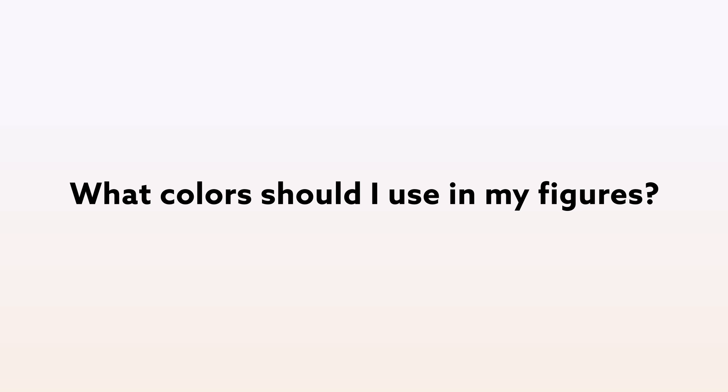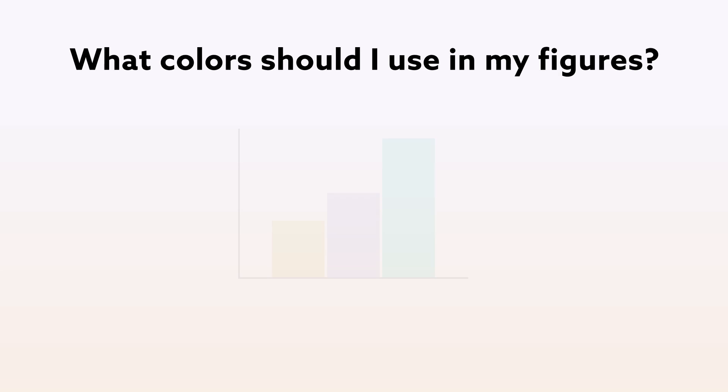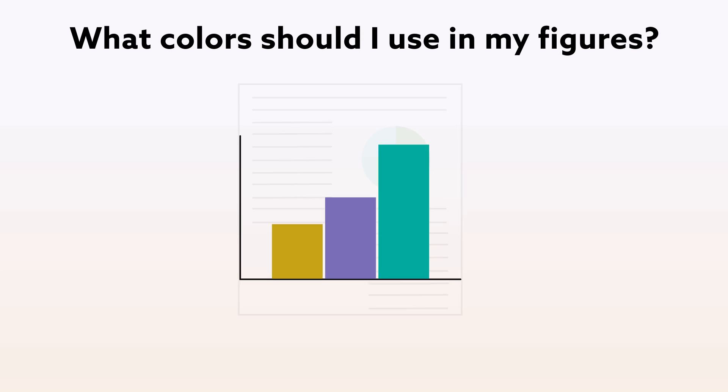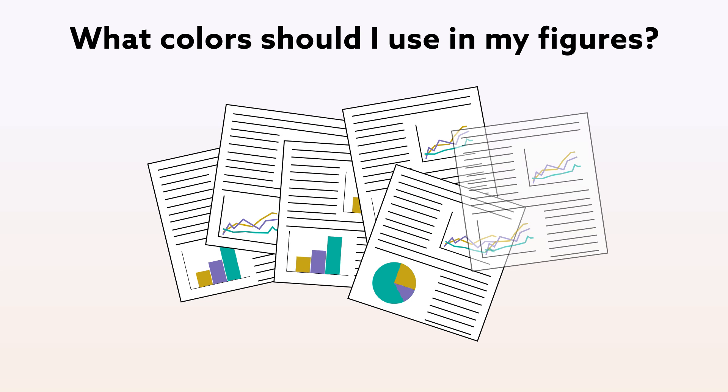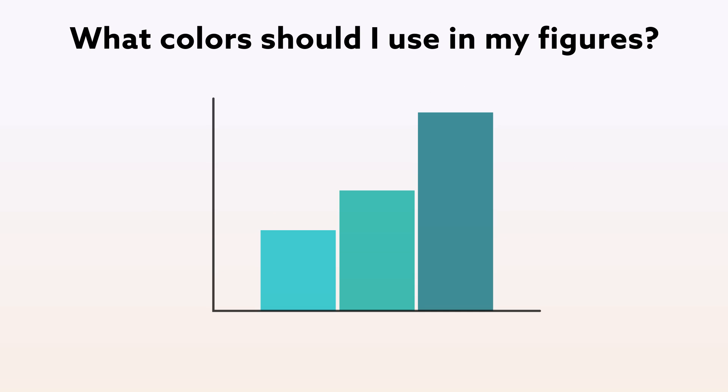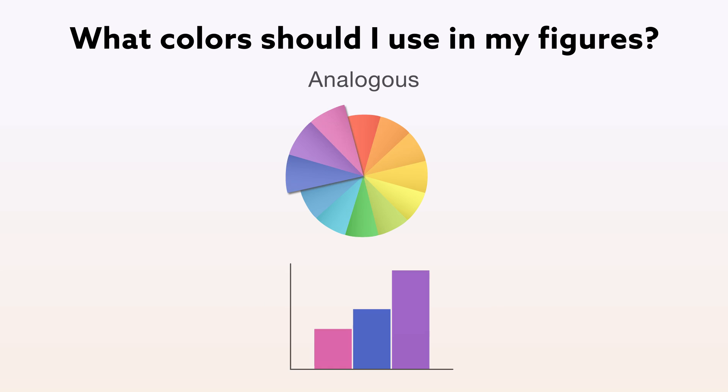The color or colors that you choose are really up to you. Some researchers prefer a specific color palette and use it consistently throughout their work as a sort of branding. Others choose colors depending on how their data are related. For example, different shades of the same color can indicate closely related data, and an analogous palette can help illustrate similarities between different data sets.